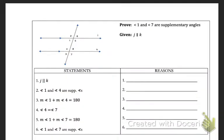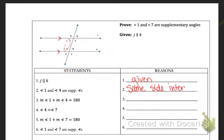On this one they're asking us to prove that angle 1 and angle 7 are supplementary angles, given that line j is parallel to line k. The first thing I want you to do is write down your given and mark it on your picture. The next statement is that angles 1 and 4 are supplementary. They're both inside the lines, so those are same-side interior angles, and by the theorem, same-side interior angles are supplementary.